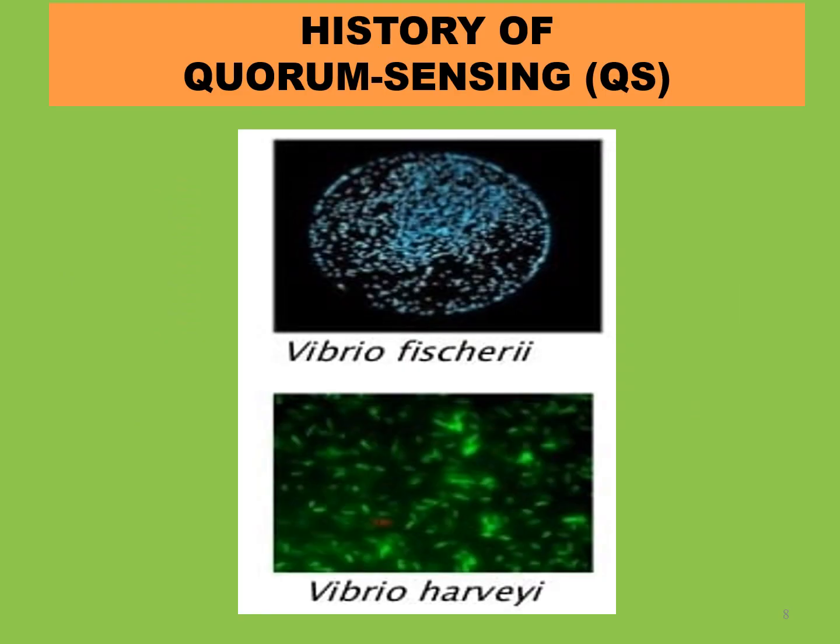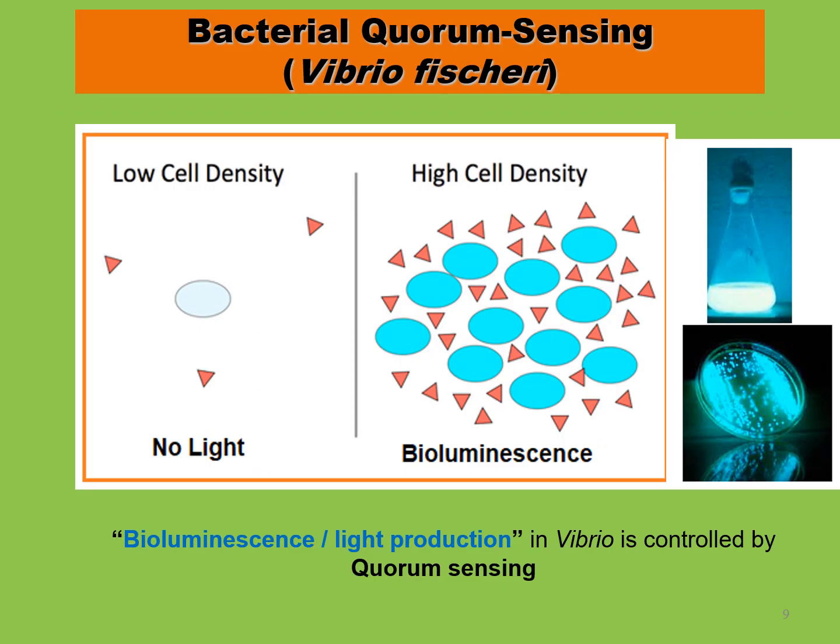History of quorum sensing: cell-to-cell communication was first identified in the late 1960s by Nielsen and his collaborators. However, the cell-to-cell communication mechanism was revealed in the 1970s by Hastings and his collaborators. The term quorum sensing was first used by Fuqua. Initially, this system was observed and identified in a marine luminescent bacterium, Vibrio fischeri, and in a free-living marine bacterium, Vibrio harveyi. Quorum sensing has been studied very well in Vibrio fischeri.